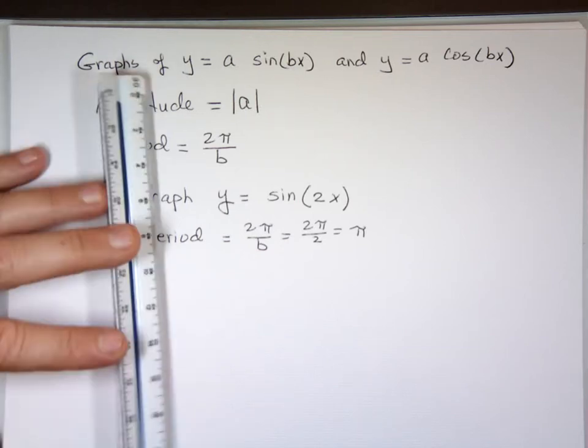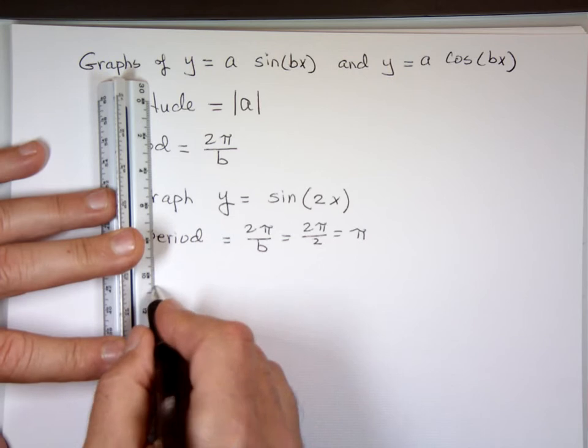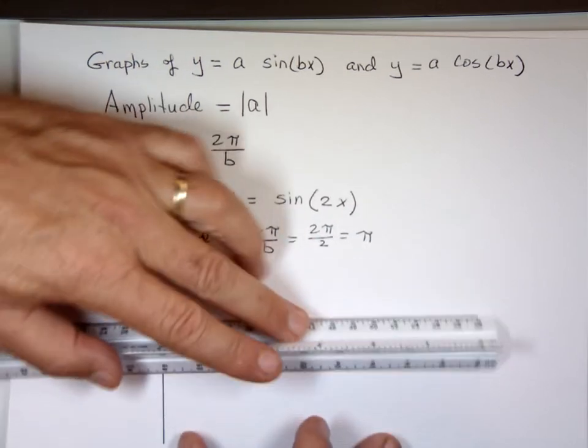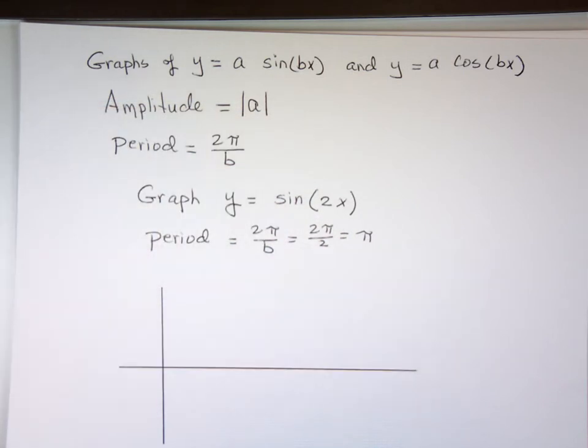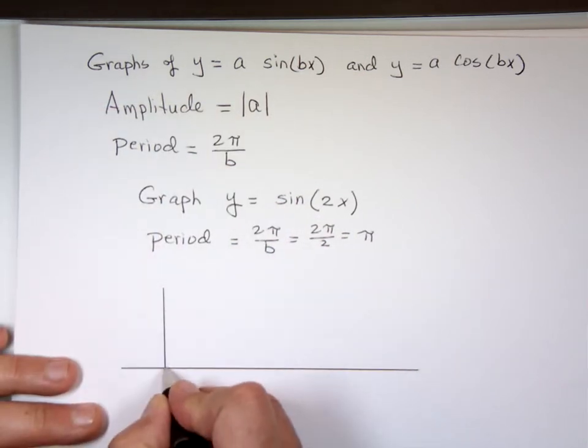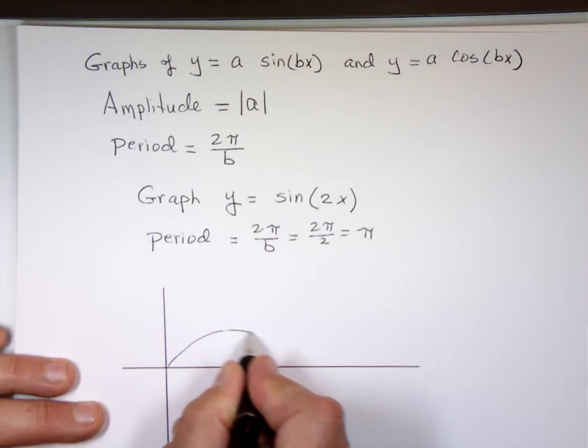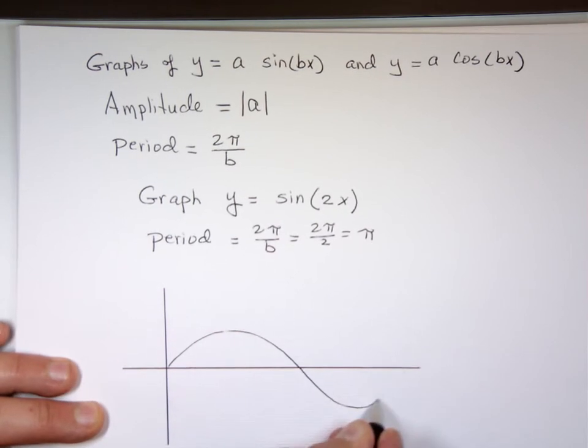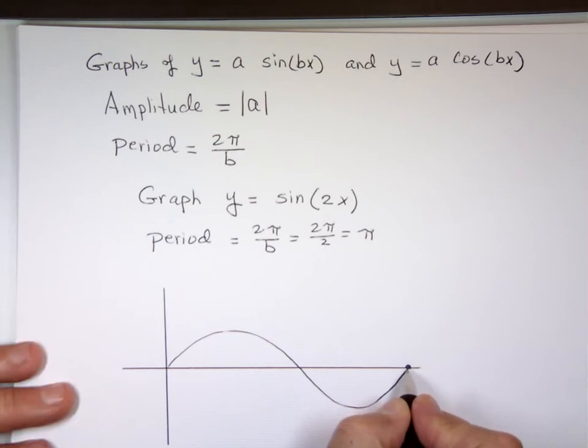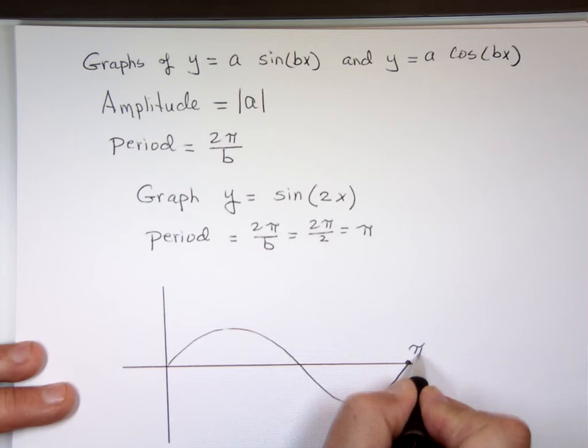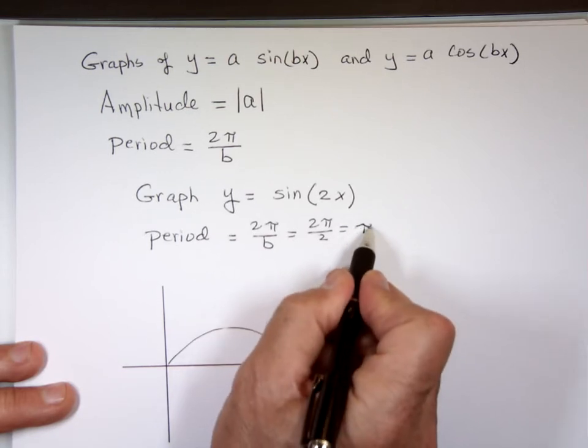So when I graph that, we know what the sine function looks like. It's going to look like this. But instead of this number being 2 pi, it's going to be 1 pi, because it takes 1 pi to complete one full cycle.